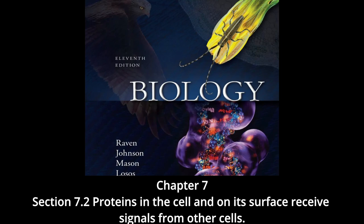All cell signaling pathways share common elements: a chemical signal passing from one cell to another, and a receptor that receives the signal in or on the target cell. Many cell signals are lipid soluble or very small molecules that can pass across the plasma membrane and interact with intracellular receptors. Some bind to receptors in the cytoplasm; others pass across the nuclear membrane and bind to receptors within the nucleus. These intracellular receptors may trigger a variety of responses depending on the receptor type.